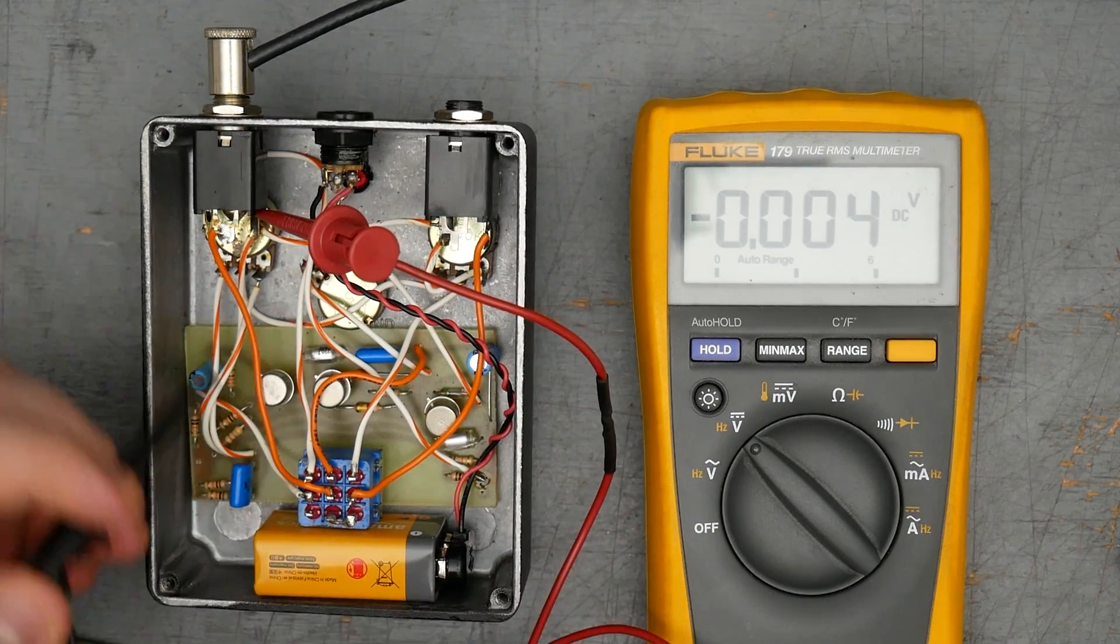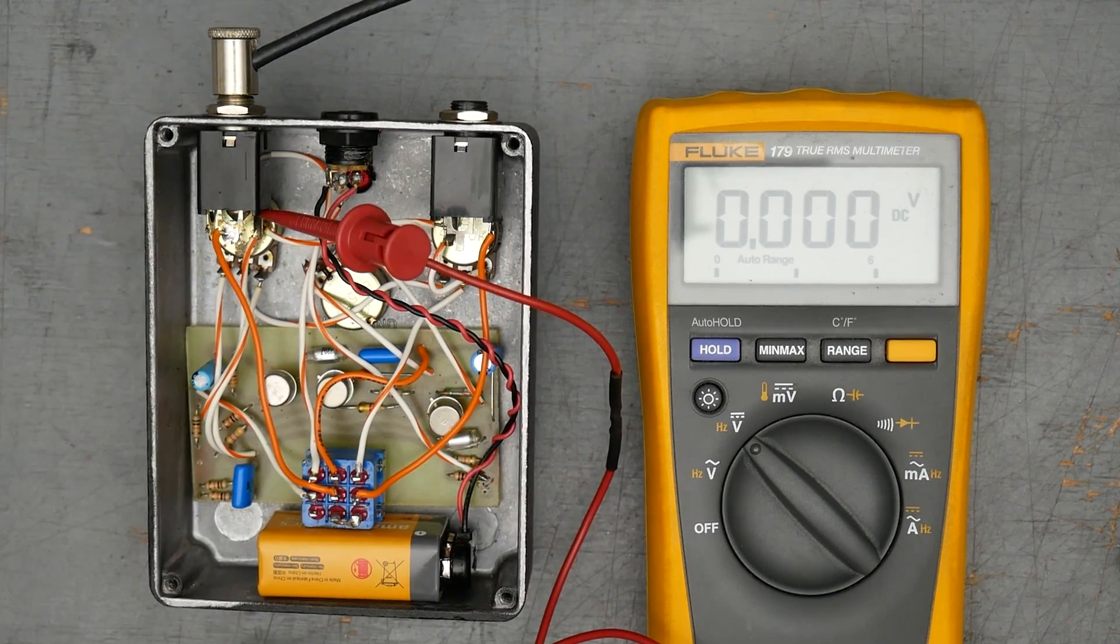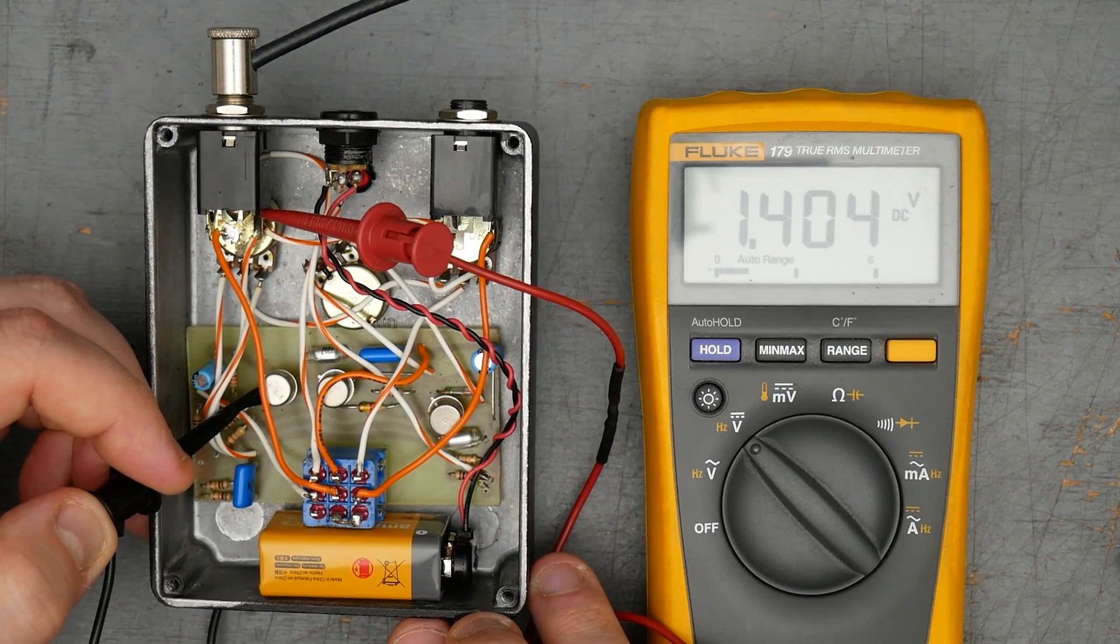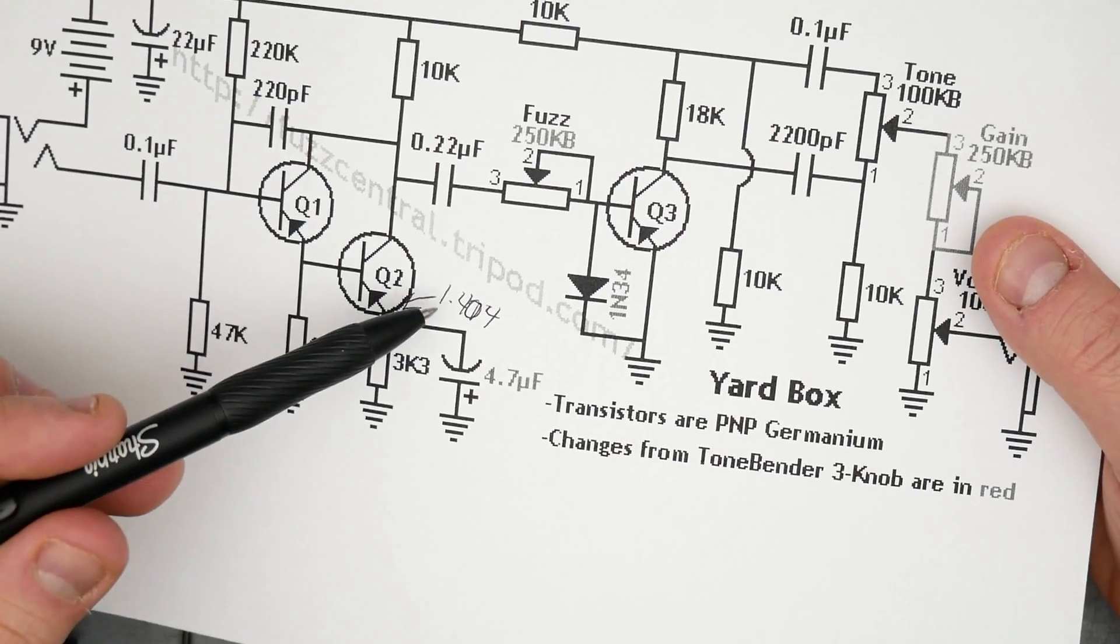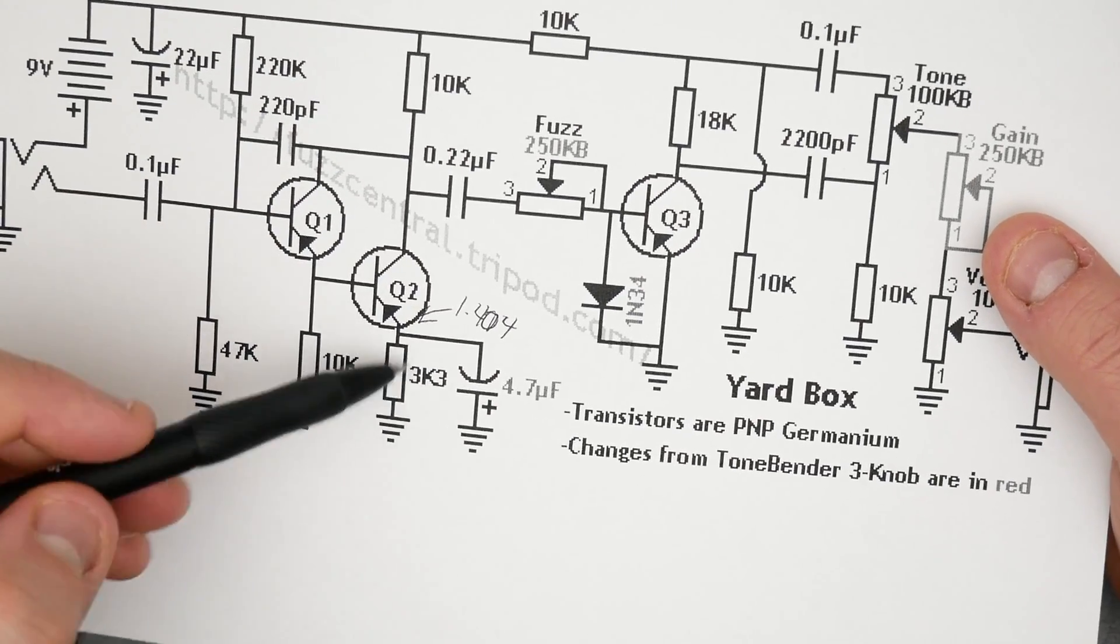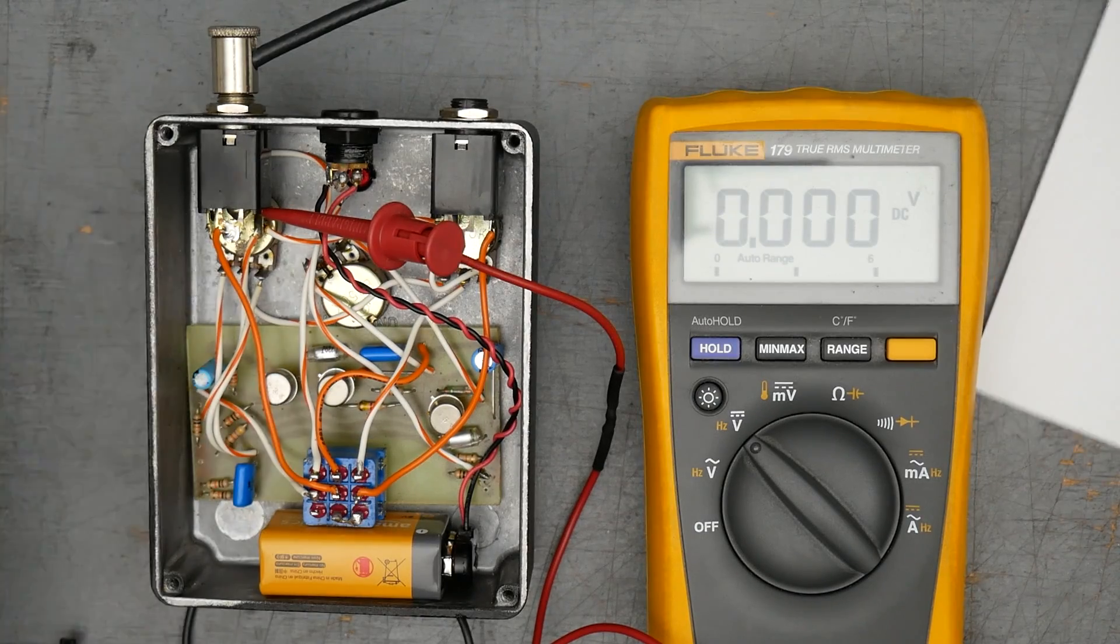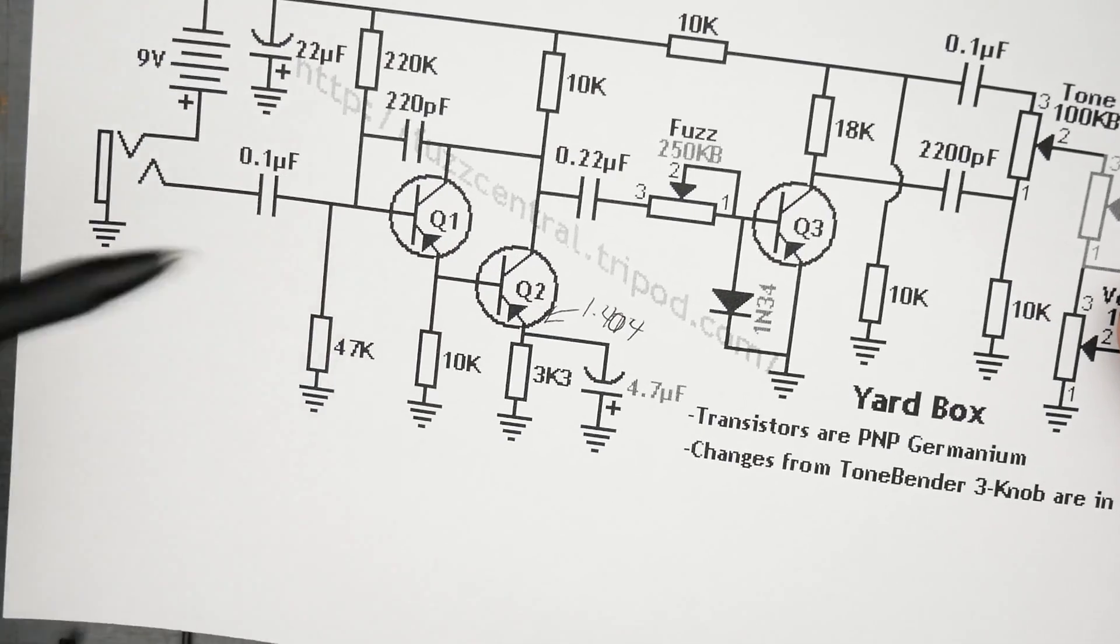Starting here for the emitter. So the transistors are out of order. So it's Q2, Q1, and then Q3 over here. This is Q2 emitter, which is 1.404 volts. So that's right here. Emitter of Q2, 1.4 volts, and that has the 3.3K and the bypass cap, 4.7 microfarad. In this case, it's actually 10 microfarad in this pedal, but that'll let a little more bass low end through. But yeah, so we have 1.4 volts there.